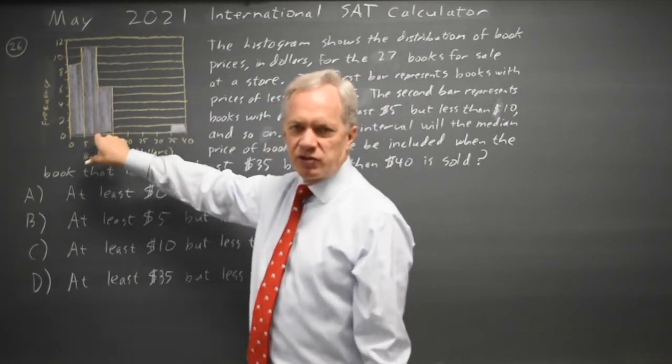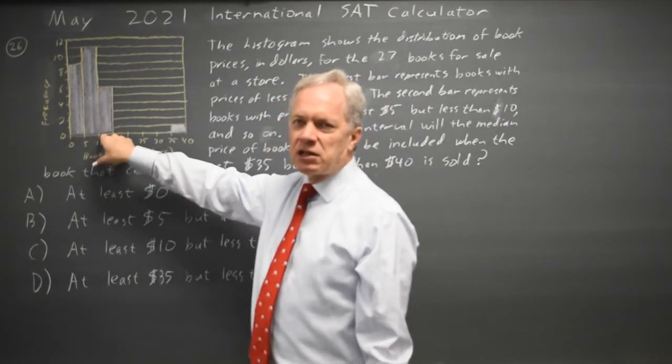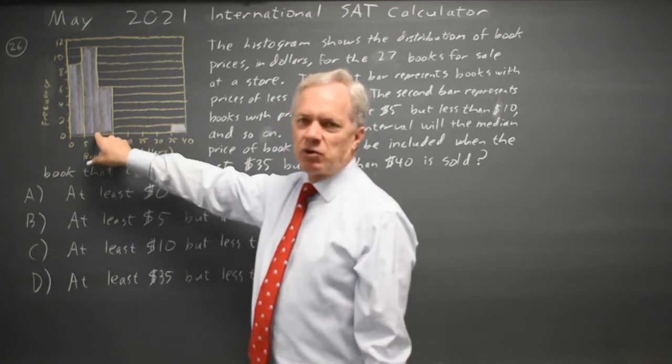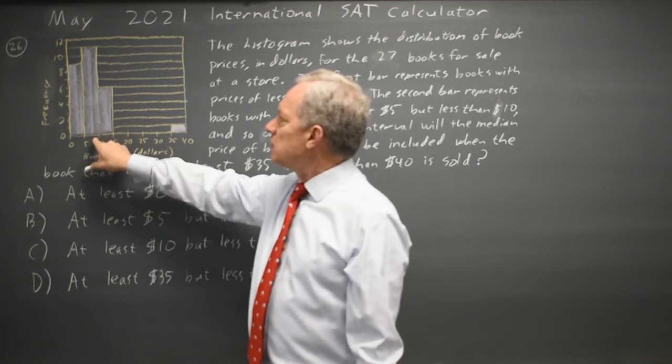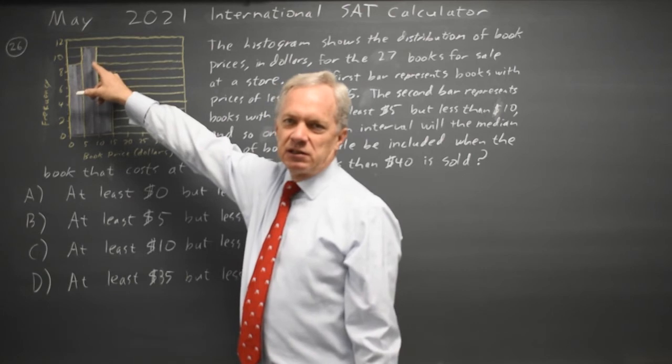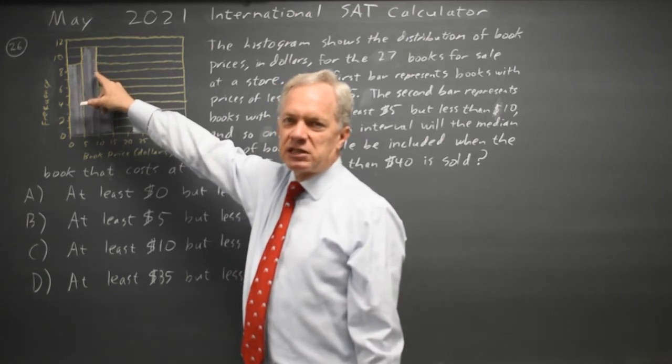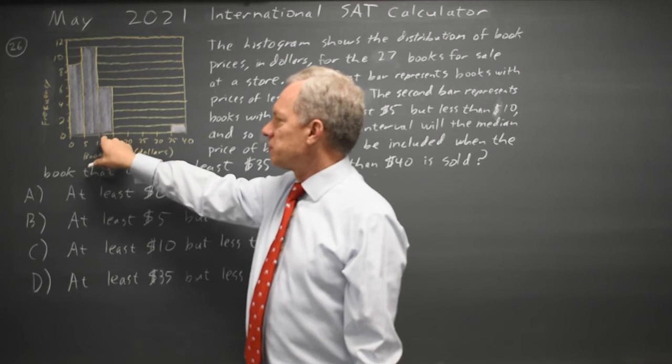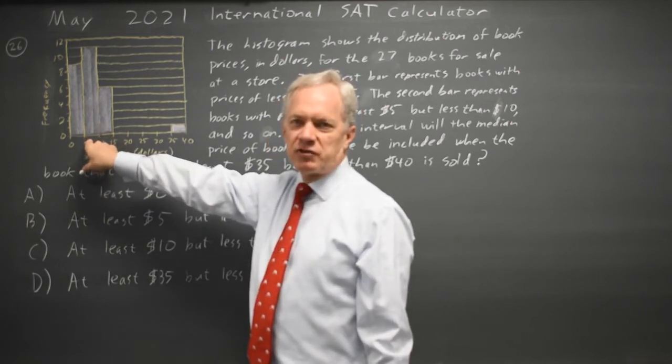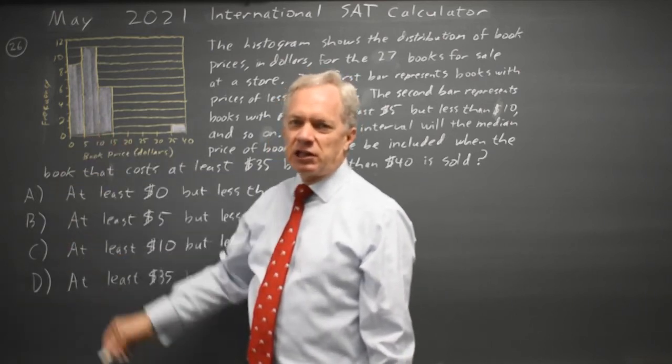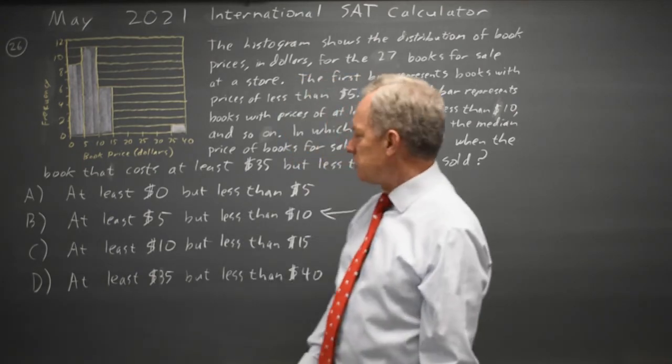And then the next 7 will be above the median but there's 11 in the next group. So the 7th and 8th one down from this group are both in the 5 to 10 interval and the median will be midway between those two numbers.